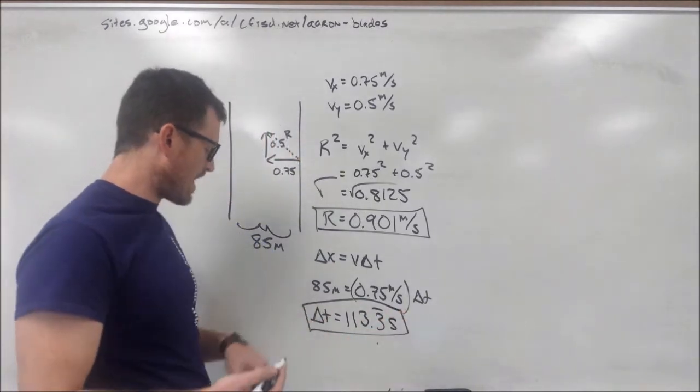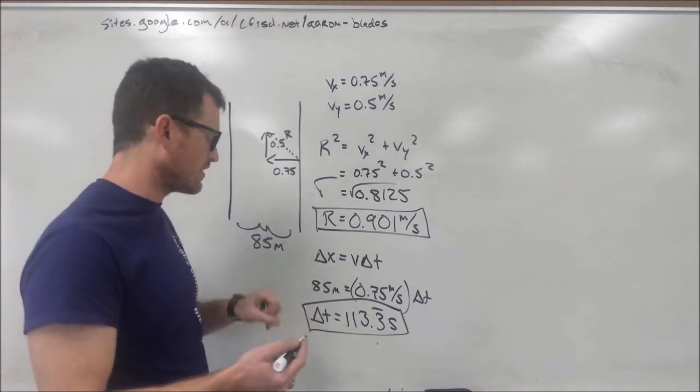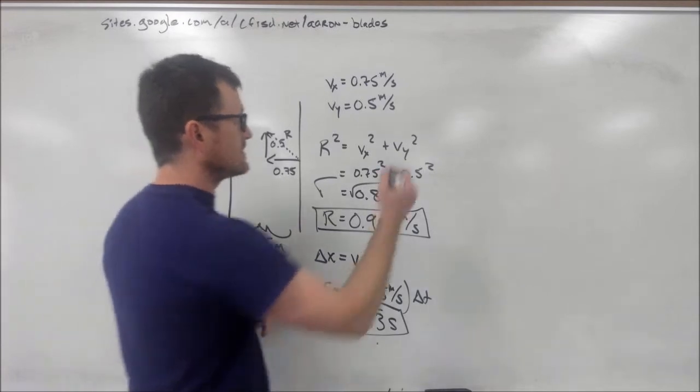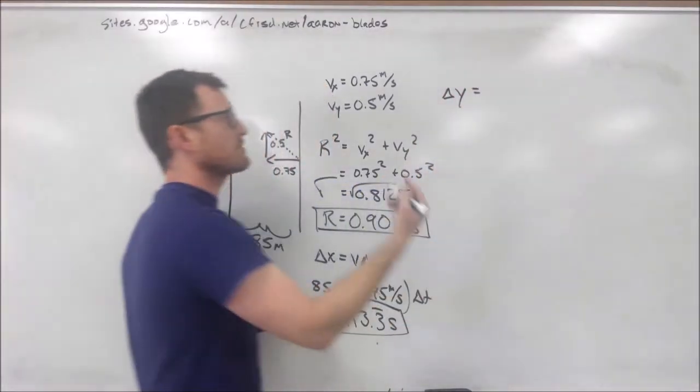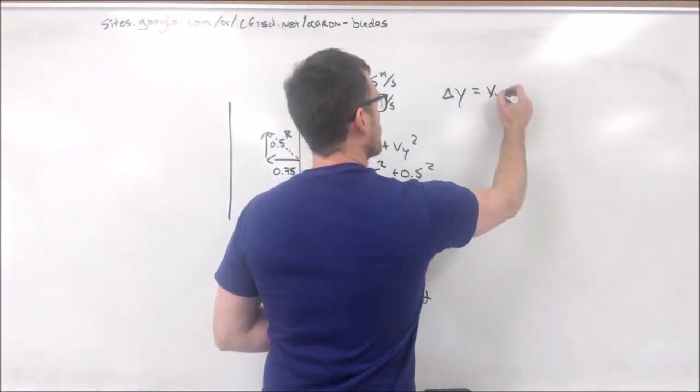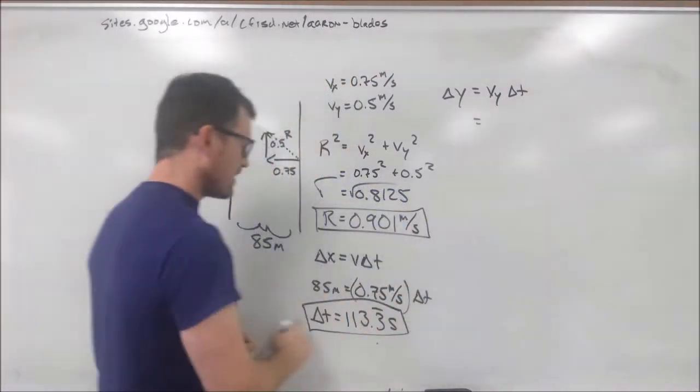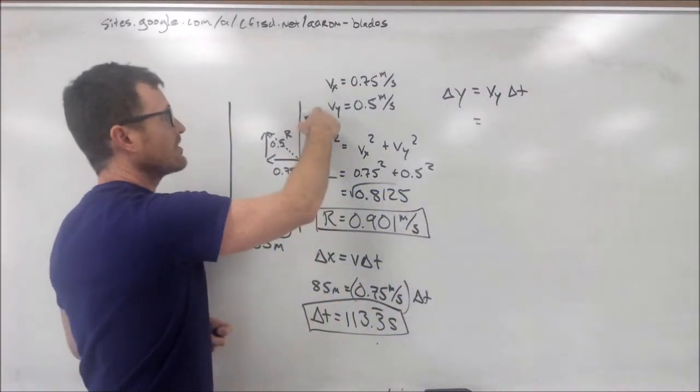Next, let's go ahead and figure out how far downstream the turtle ends up at the end of those 113 seconds. Similarly, we're going to use our displacement equation, but I'm going to write delta y since it's headed in the y direction. So, v y multiplied by delta time.